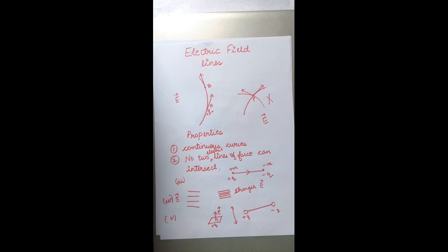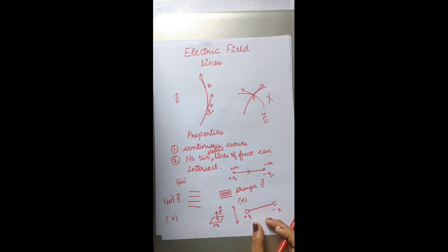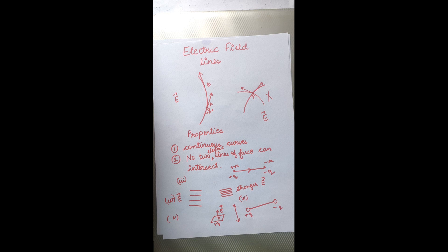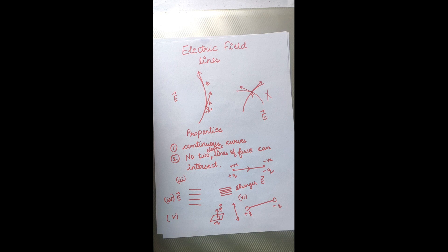The sixth and last property states that electric field lines have a tendency to contract lengthwise and expand laterally. I am reserving this property for the next video, where I will explain it while discussing the sketching of lines of force for various cases, including the case of an electric dipole. I hope all the other properties are clear to you and the concept of electric field lines is also clear. Let's wait for the next video — thank you.